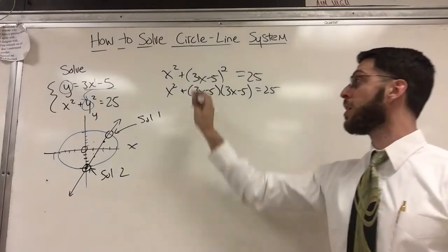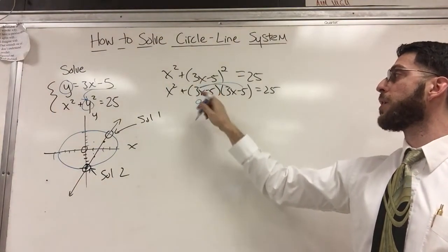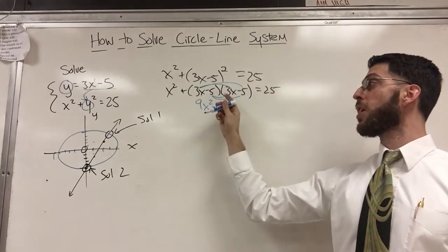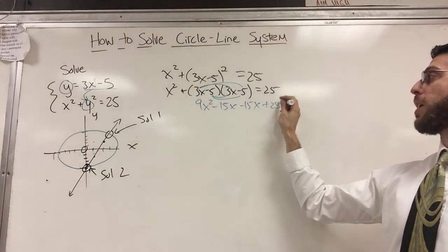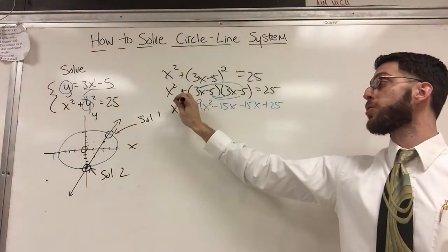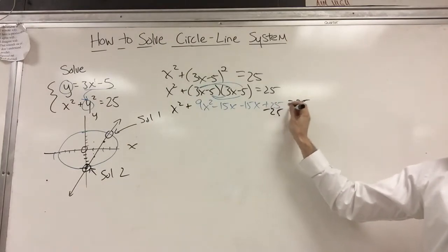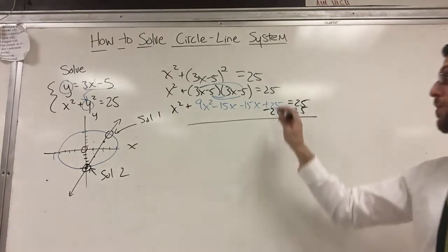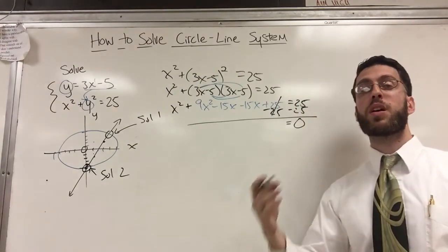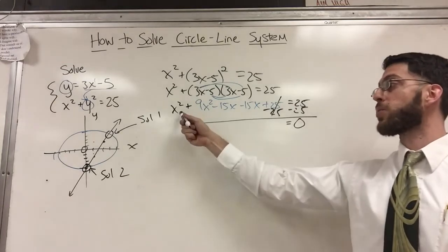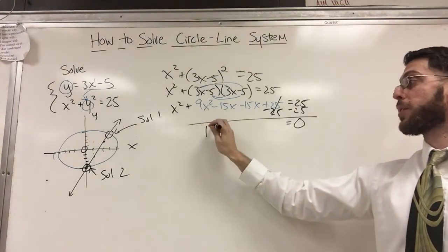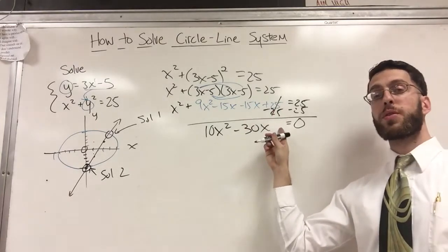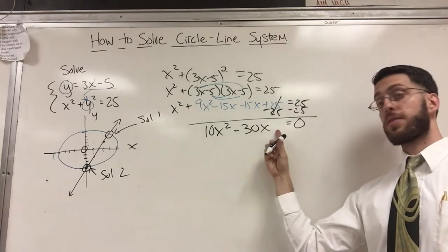I'm going to show my work just in case. First outer: that's 9x² − 15x, multiplying the terms; then another −15x; and that's a positive 25. Then everything else drops down — x² drops down and equals 25 drops down. If you're good at math you can immediately subtract 25 from both sides. Combining like terms: x² + 9x² is 10x², minus 15 and another minus 15 is −30x, and that's it — there's no third term. Usually you're looking at ax² + bx + c = 0.